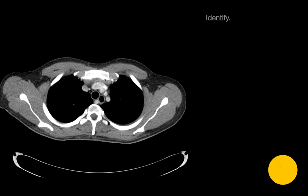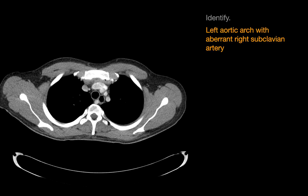Identify this anatomic variant. In this particular case, we saw a left-sided aortic arch, but a great vessel coming off the thoracic aorta courses posterior to the trachea and the esophagus. The esophagus is slightly dilated here. This is an example of a left-sided aortic arch with an aberrant right subclavian artery.